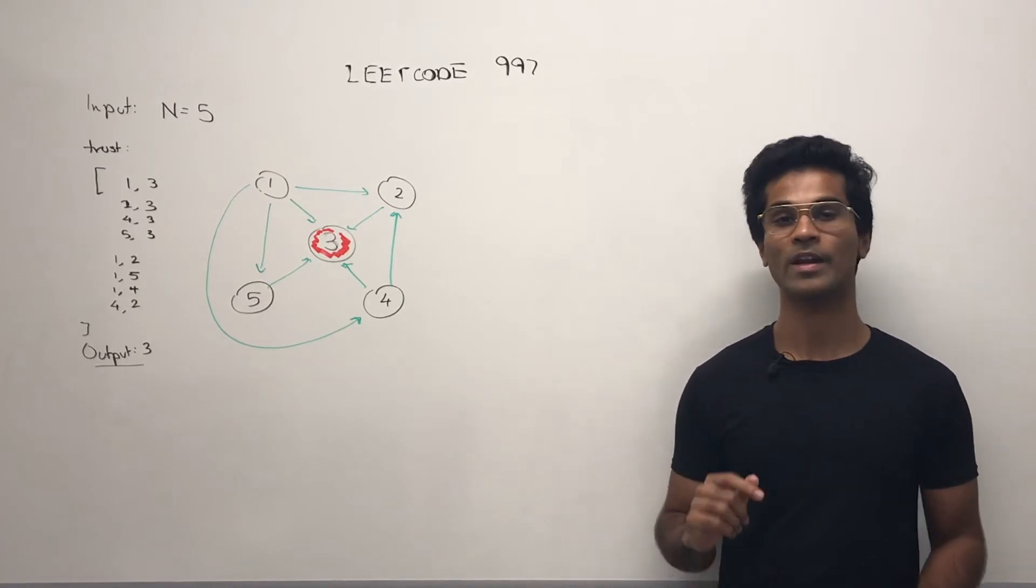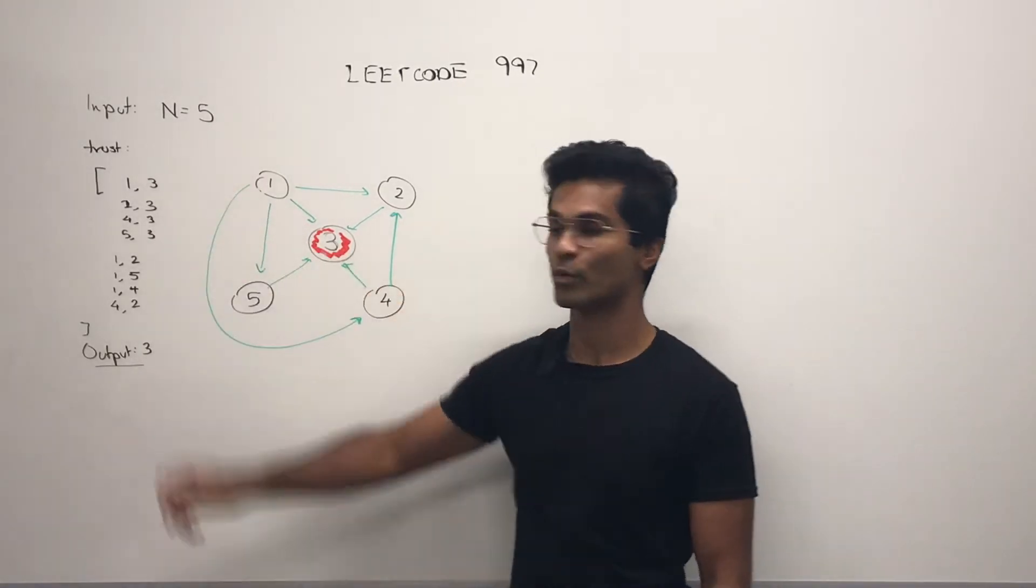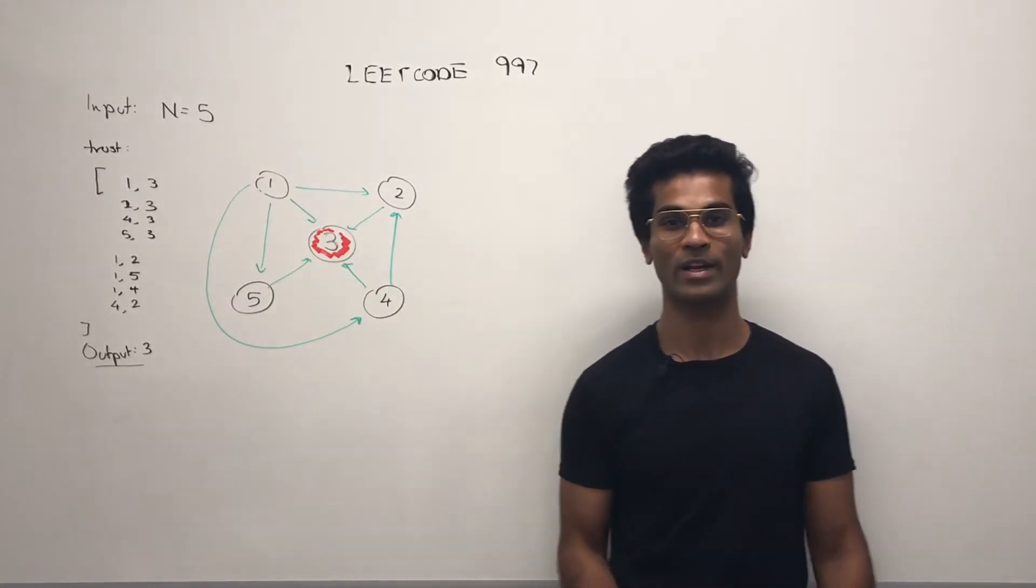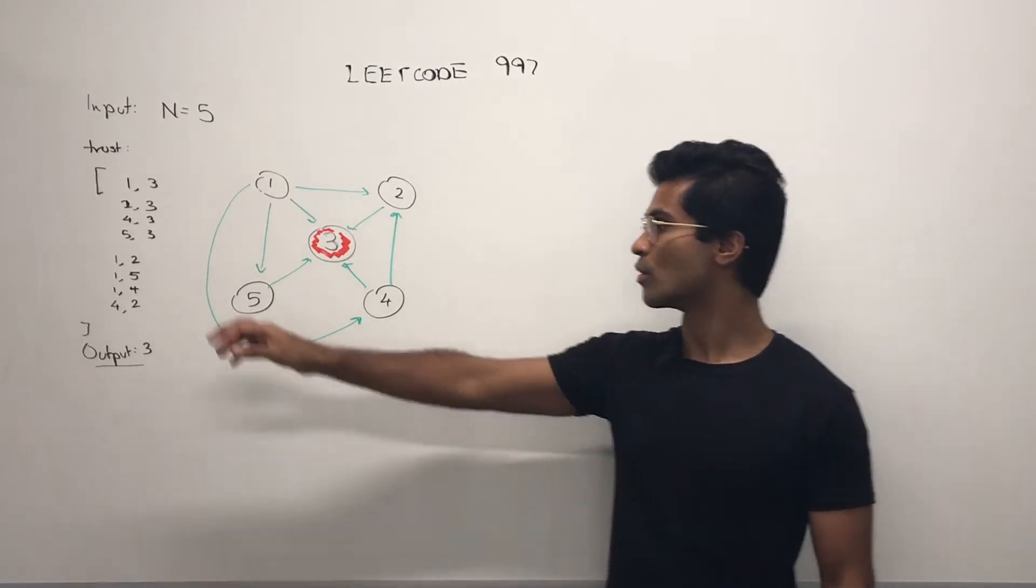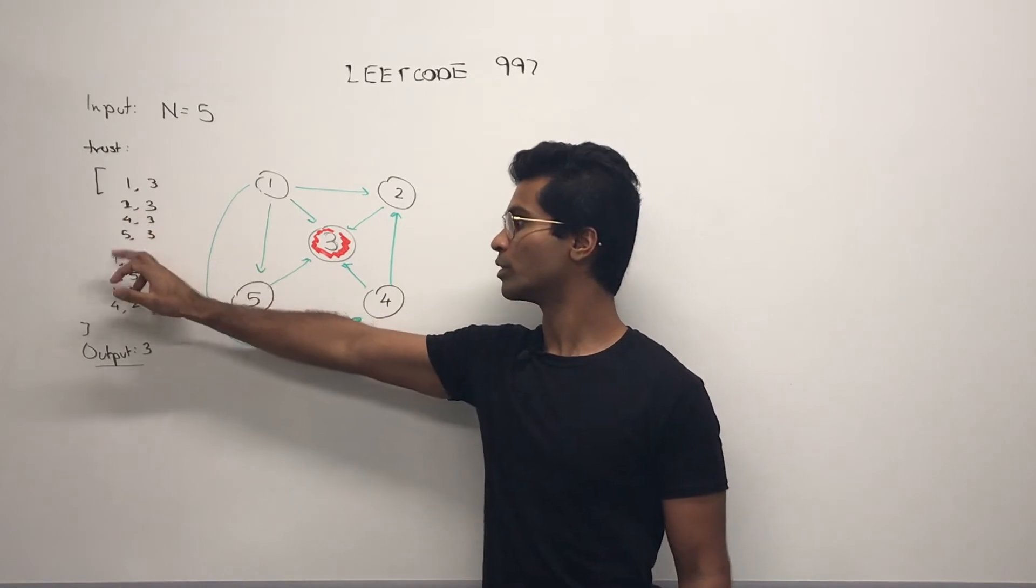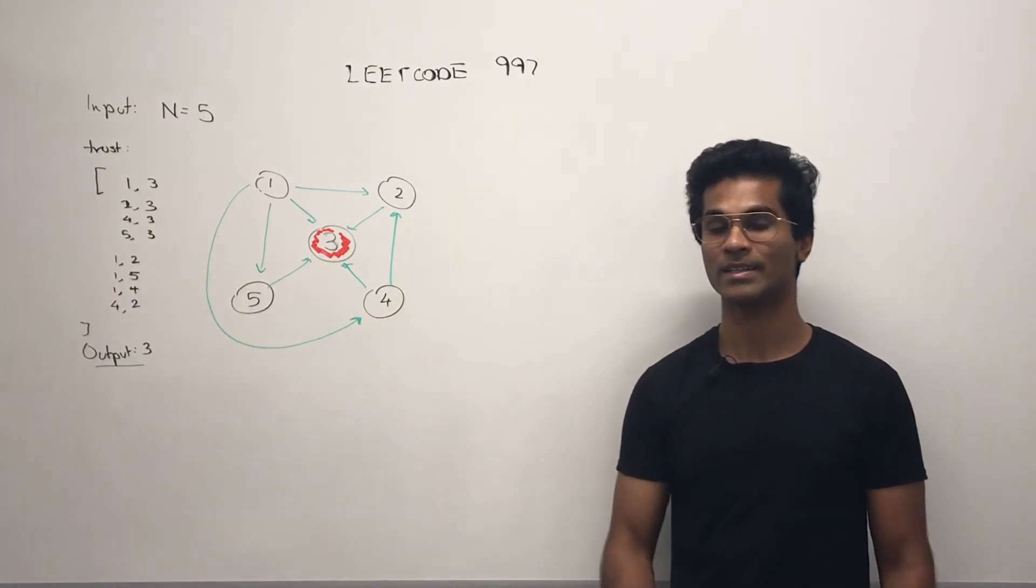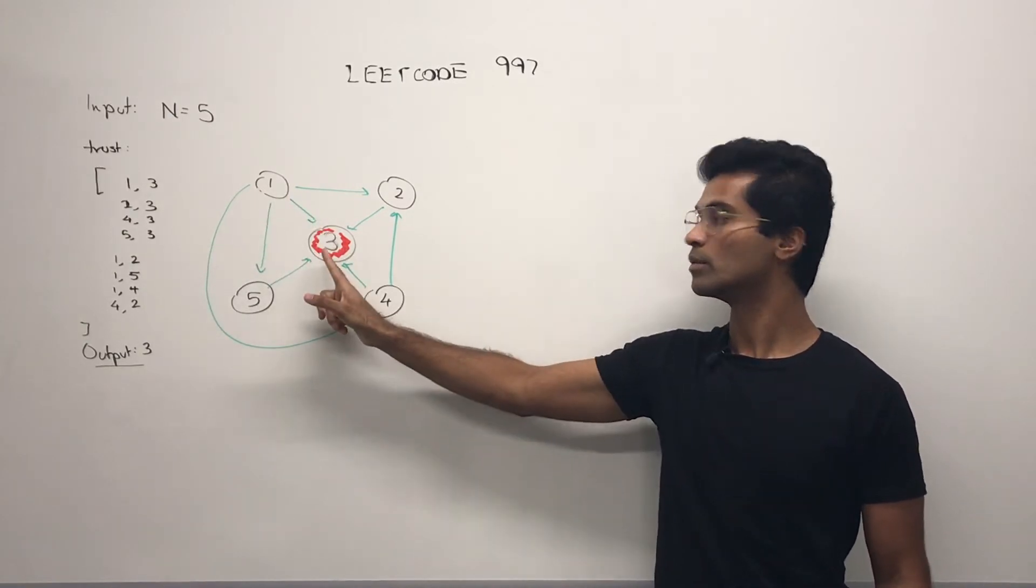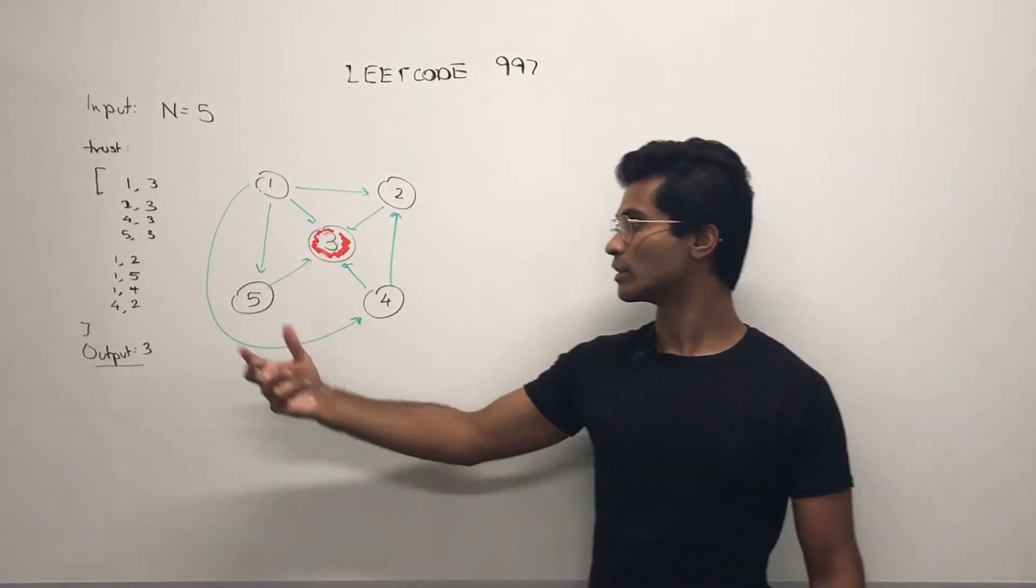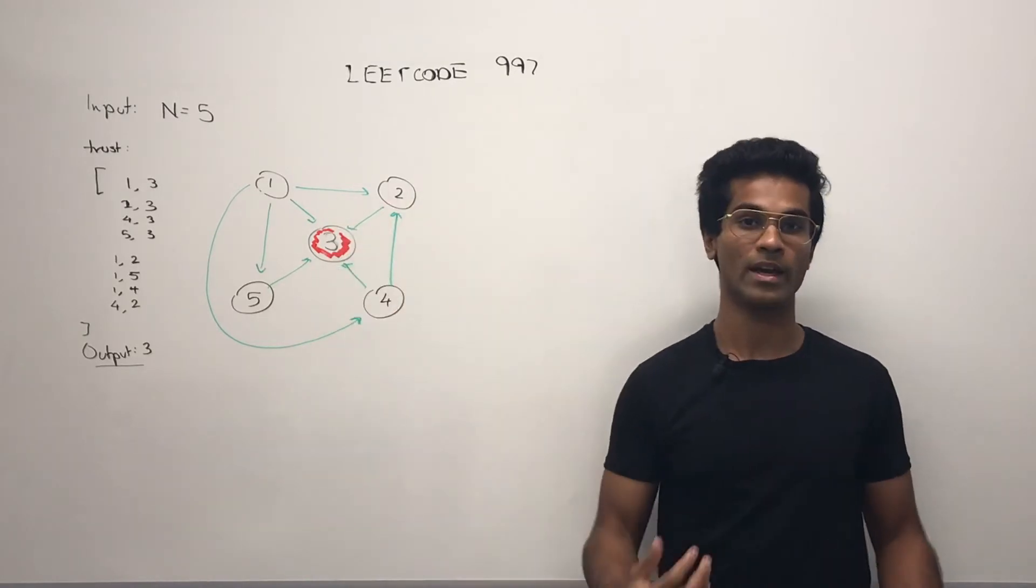Now, the input is going to be an integer which represents the total number of people in the town and a 2D array of integers. So 1, 3, 2, 3, 4, 3 means that we have an edge going from 1 to 3. One node to 3 node. Similarly, we have other outgoing edges.